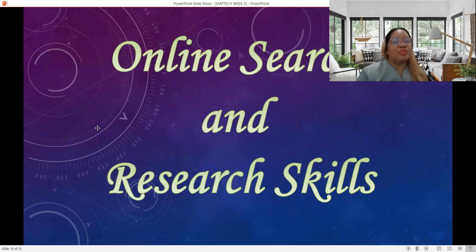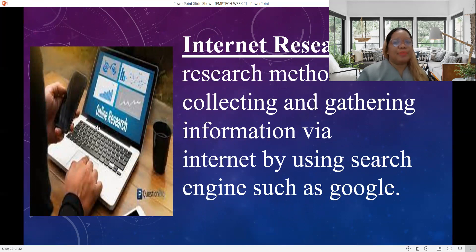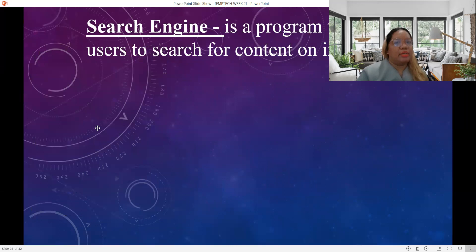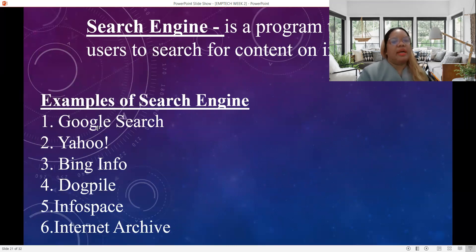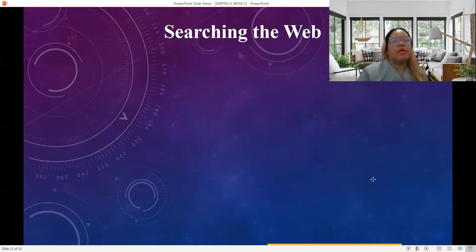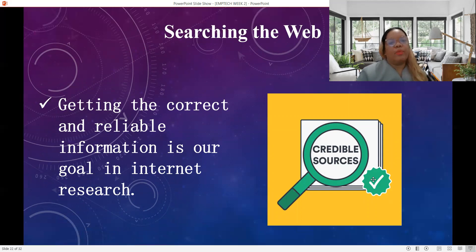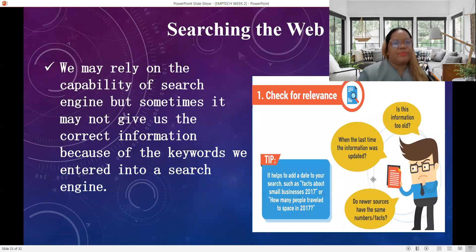We also have online search and research skills. Internet research is a research method of collecting and gathering information via the internet by using search engines such as Google. A search engine is a program that allows users to search for content on the internet. Examples of search engines include Google Search, Yahoo, Bing, DogPile, Infospace, and Internet Archive. When searching the web, we have to get correct and reliable information. We may rely on search engines, but sometimes they may not give us the correct information because of the keywords we enter, so we have to be careful.